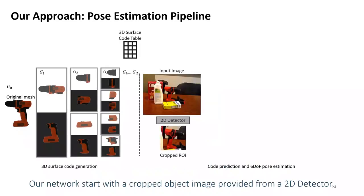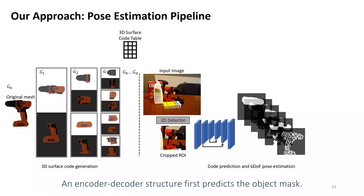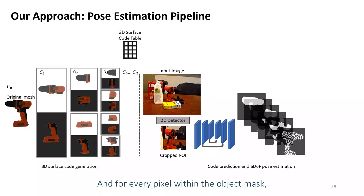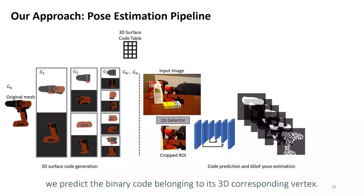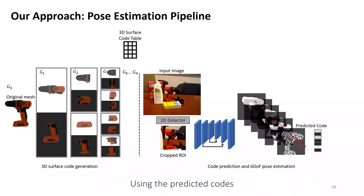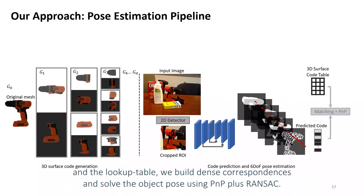Our network starts with a cropped object image provided from a utility detector. An encoder-decoder structure first predicts the object mask, and for every pixel within the object mask, we predict the binary code belonging to its 3D corresponding vertex. Using the predicted codes and the lookup table, we build dense correspondences and solve the object pose using PnP plus RANSAC.